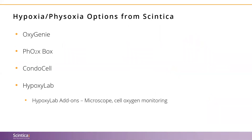What I want to do now is touch on four separate options that we offer and walk you through a couple of videos of some of these products, as this will give you a better feel for them. The four products we will touch on are the Oxygeni, the FoxBox, the CondoCell, and the Hypoxylab. Beyond that, we will delve further into the Hypoxylab's add-ons to give you a better idea of all the functionalities available to a researcher.